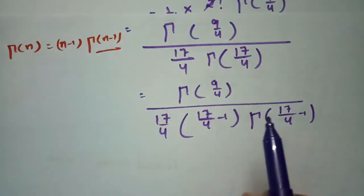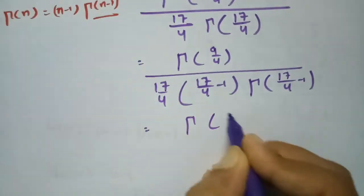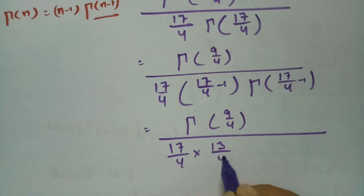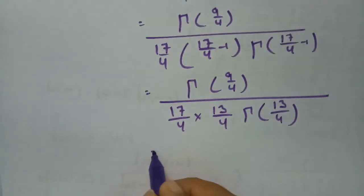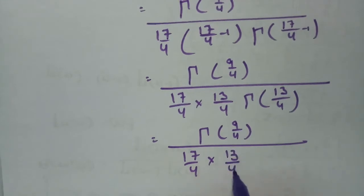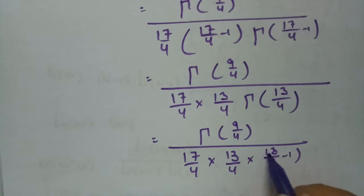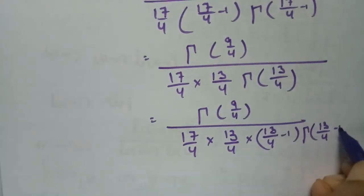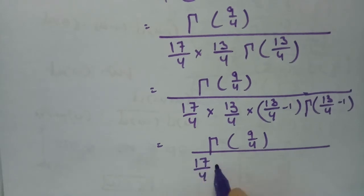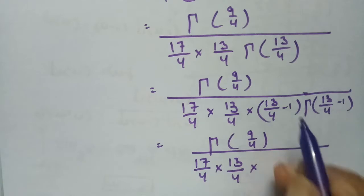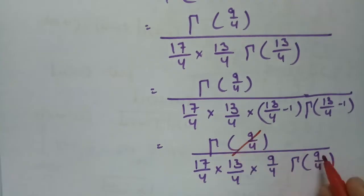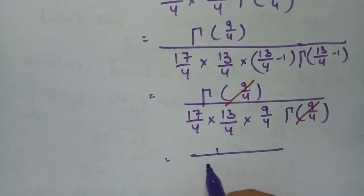Applying the recursion once more to gamma(13/4): this gives 13/4 times gamma(13/4 - 1) = 13/4 times gamma(9/4). Now gamma(9/4) appears in both numerator and denominator and cancels. What remains in the denominator is 17/4 times 13/4 times 9/4.